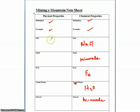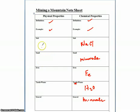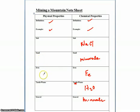What we noticed was that salt was white but it was a solid. Sand was a solid but it was made up of different-sized particles, about the same size as salt and iron. So these were very similar. Salt was white, sand was sort of tan to brownish, and the iron was blackish, grayish. Water was obviously a liquid, and gravel was larger.